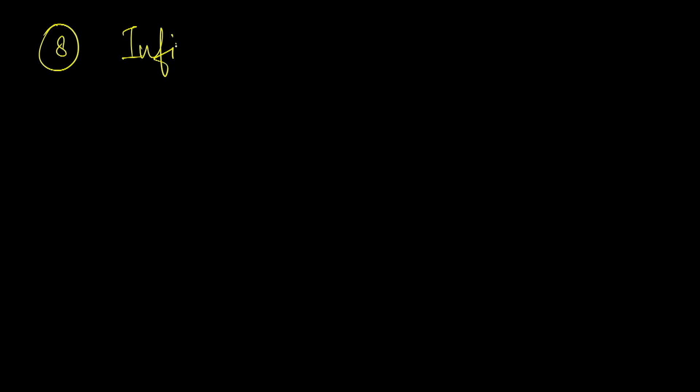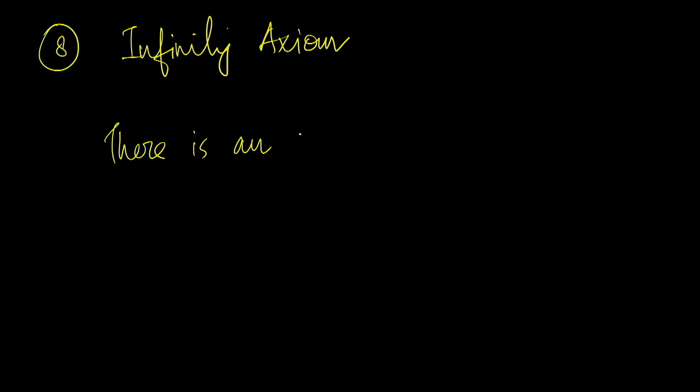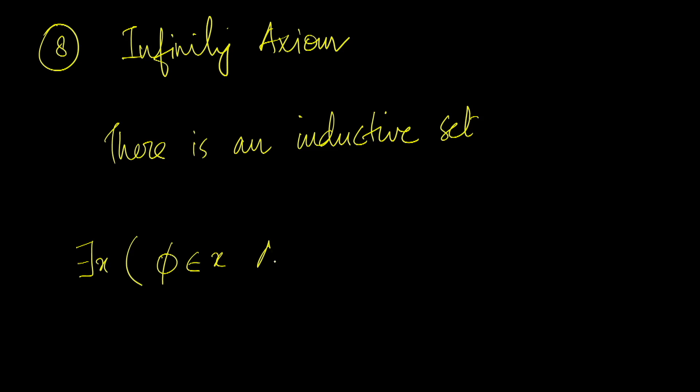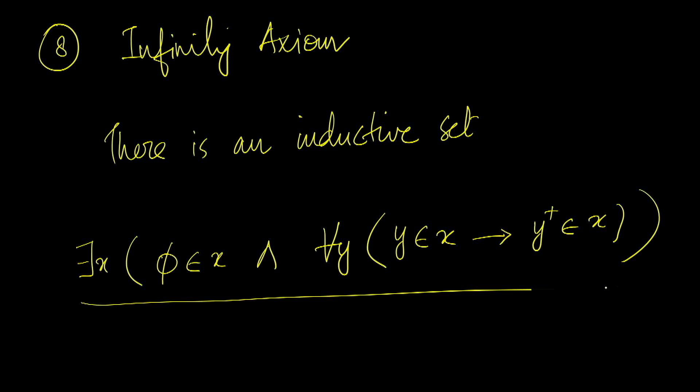The eighth axiom is the infinity axiom. What this says is that there is an inductive set — formally, there exists an x such that the empty set belongs to x, and x is closed under the successor operator: for every y, if y belongs to x then the successor of y also belongs to x. So the infinity axiom says that there is an inductive set.